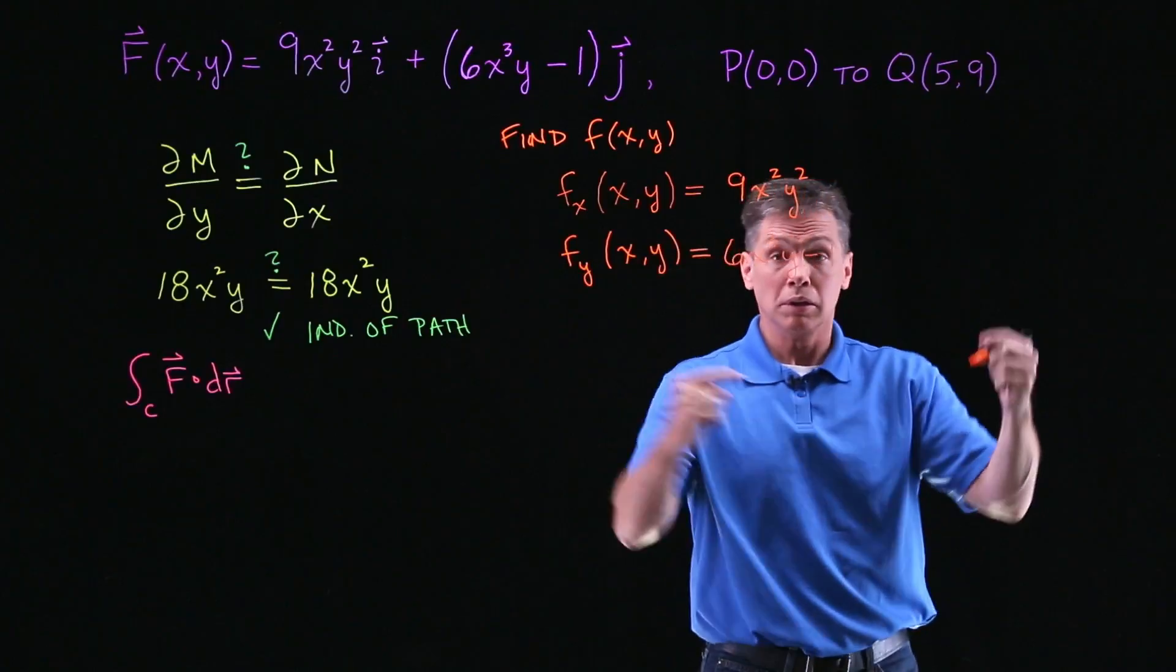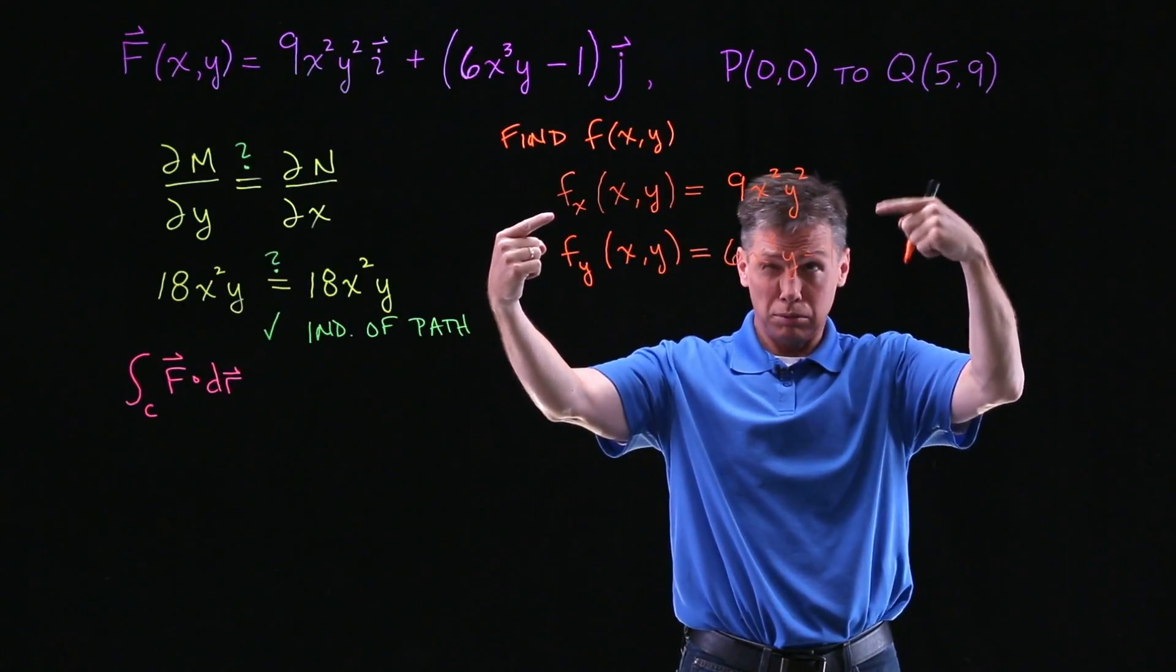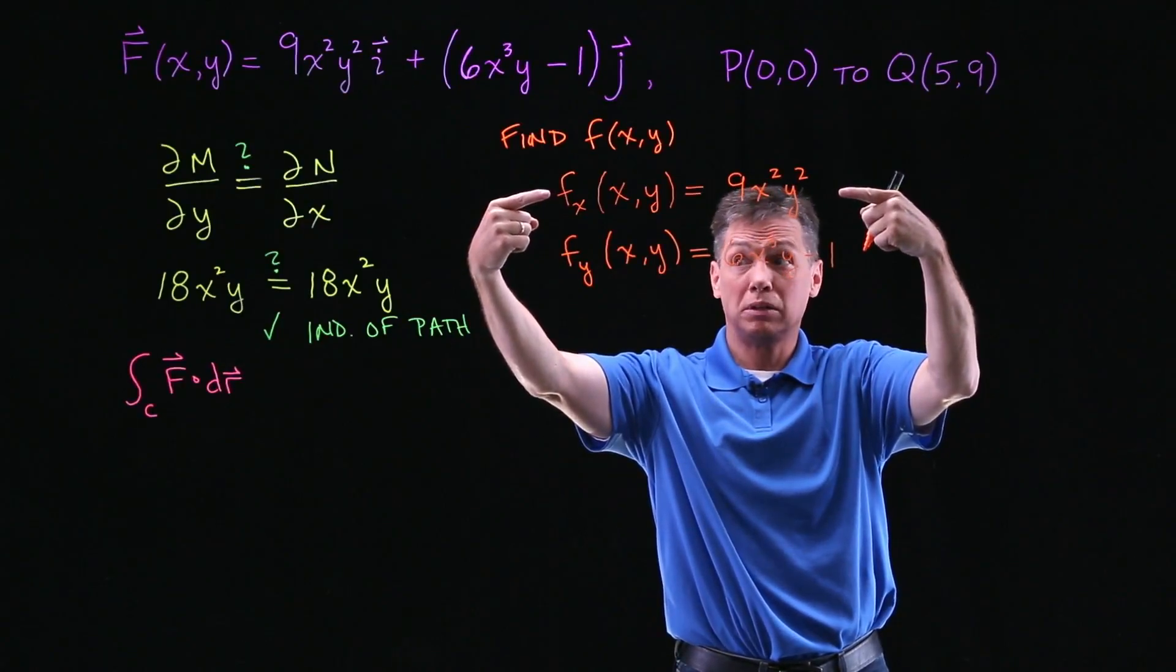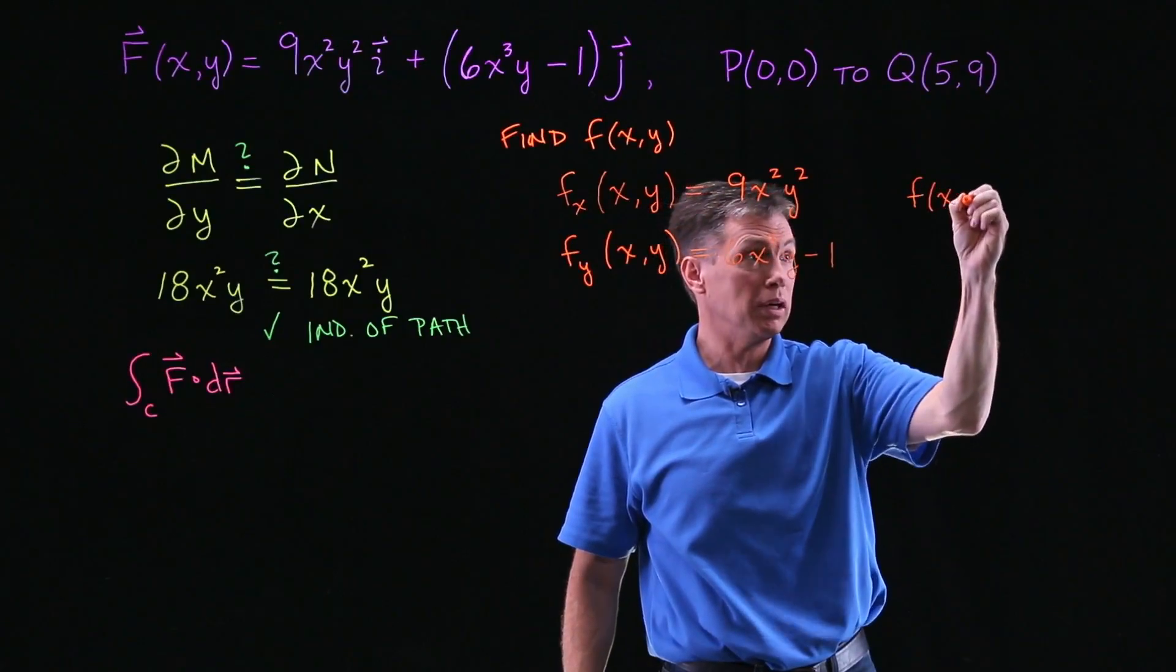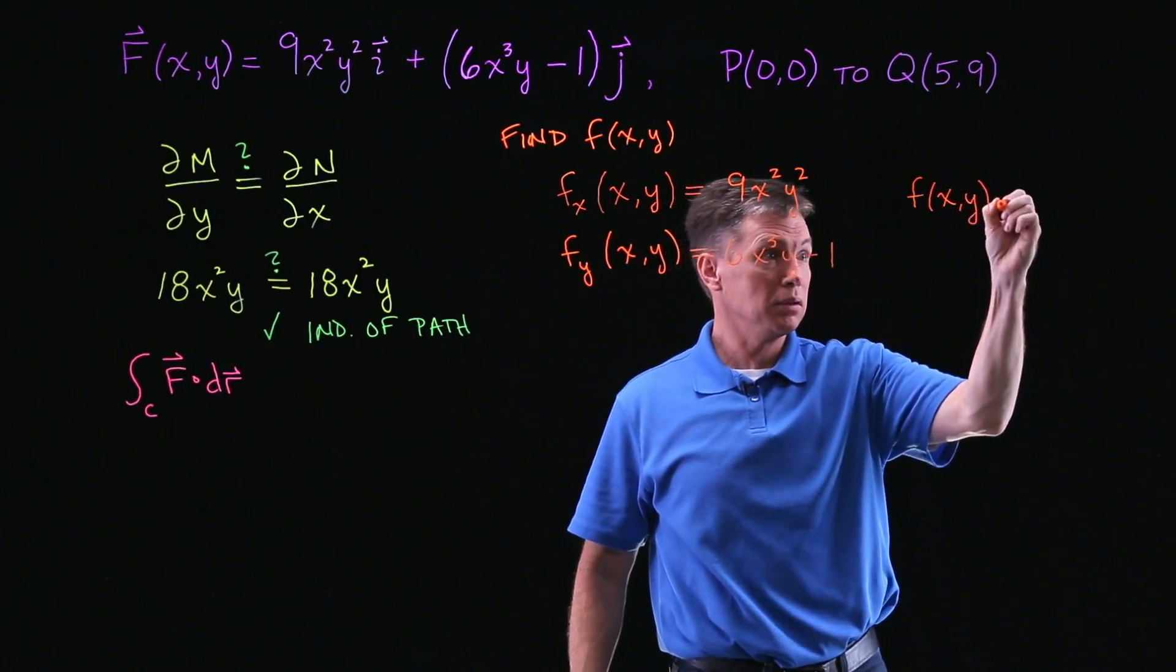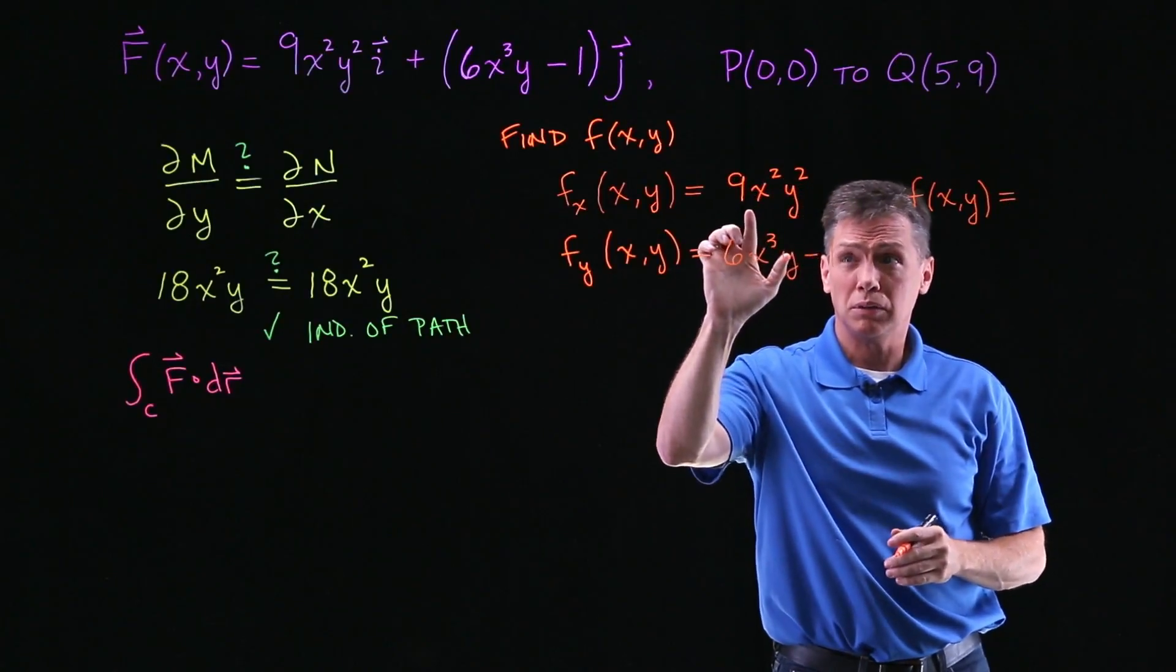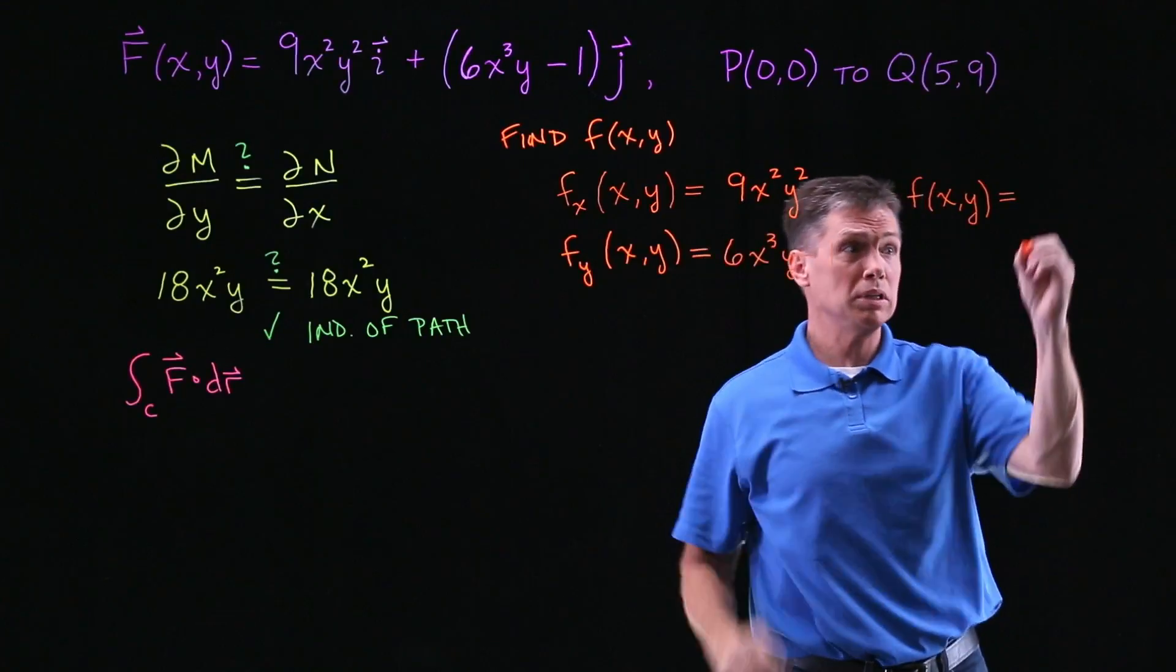From there then, slide over, we end up integrating each of these with respect to the respective variables. So let's integrate this guy with respect to X, and that's going to tell me what f of XY looks like with some uncertainty.